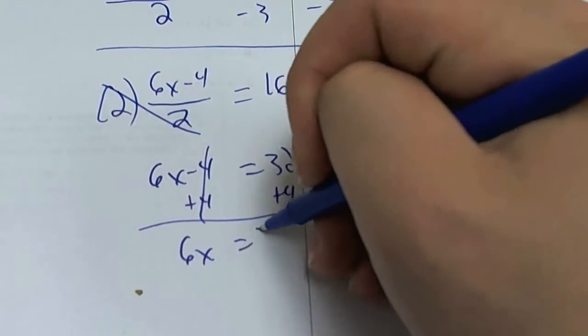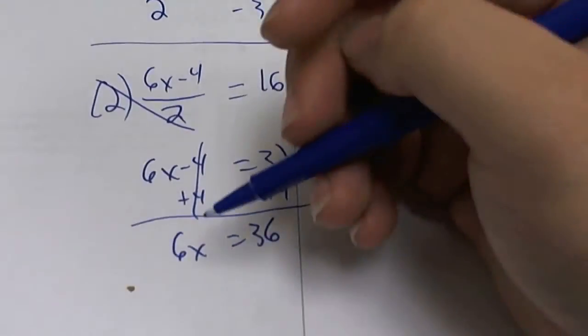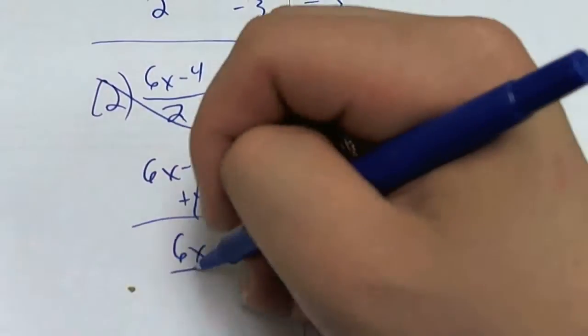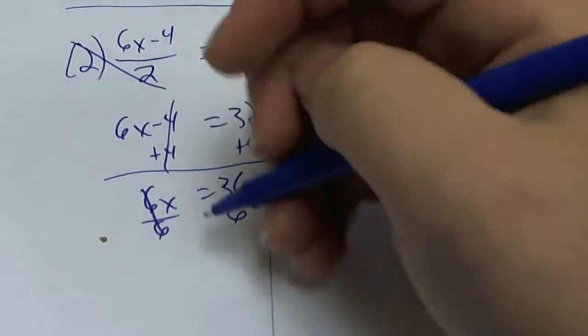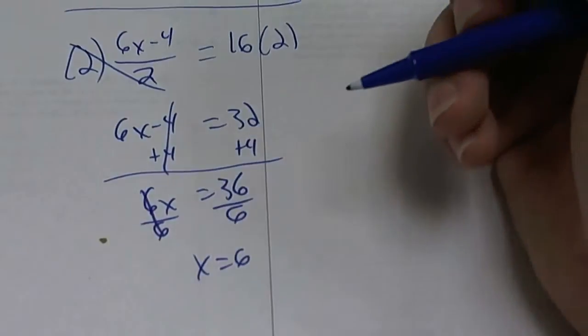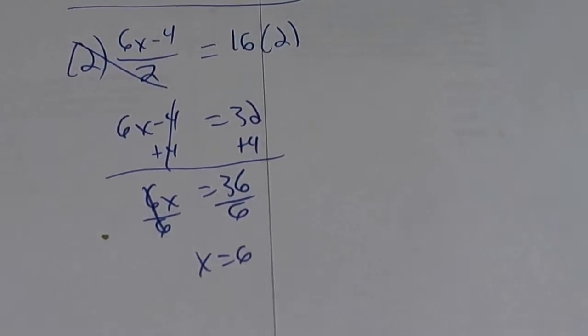Left with 6X is equal to 36. How do you get rid of the 6? You divide it. X is equal to 6. So the answer is 6. Simple.